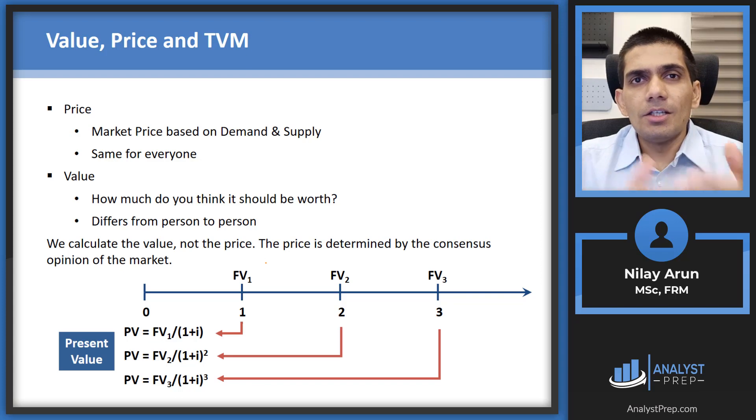Now the first thing that we're going to look at is the difference between the value and the price, because a lot of times we would come across text which would say that you need to price a bond. What we are in fact doing is that we are valuing the bond. When we say price, technically that refers to a market price. Now market price is something which is dependent upon the consensus market opinions, what most people think in the market. So it's a function of the demand and supply. Now the price remains the same for everyone across the market at one particular point of time for most of the assets. So price is not going to change from person to person.